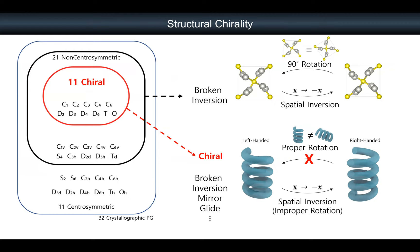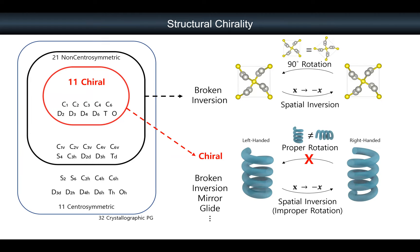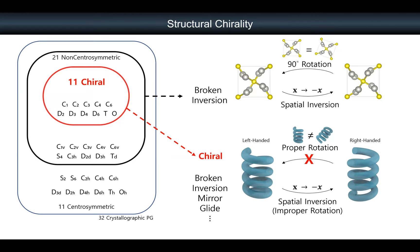We usually think about left-hand and right-hand whenever we put mirror symmetry between them — these two cannot be overlapped with just proper rotation or translation. That never happens with other things. Simply breaking inversion symmetry does not create that situation; for example, two structures connected by inversion symmetry can simply be overlapped by rotating 90 degrees and become identical. But chiral structures are two completely different objects. Interestingly, out of 32 point groups, almost one-third are chiral point groups, so chiral structures should be very frequent.